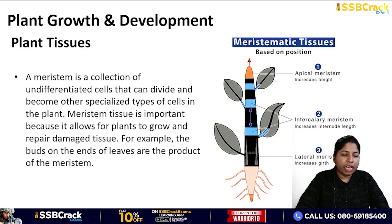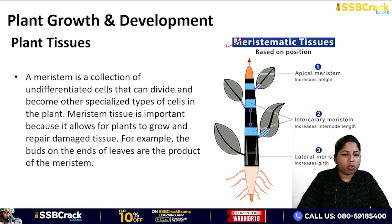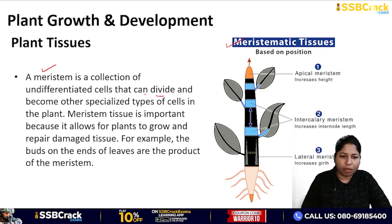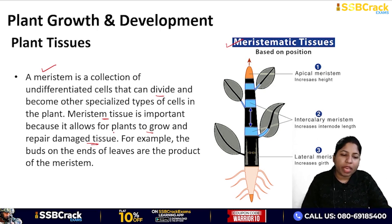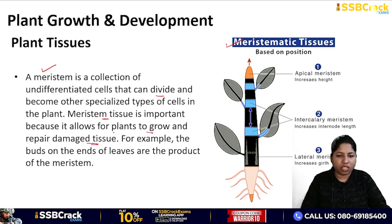This classification is very important. Plant tissues as a topic is very important — if you see the past 10 years' papers, you will find questions from this particular topic. Now let's understand meristematic tissue through a diagram. Meristem consists of undifferentiated cells that divide and become specialized types of cells. It is important because it allows plants to grow and repair damaged tissues.